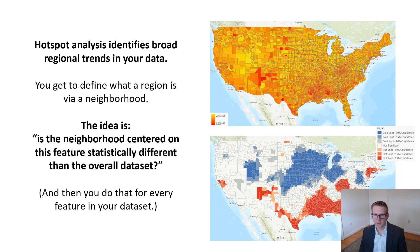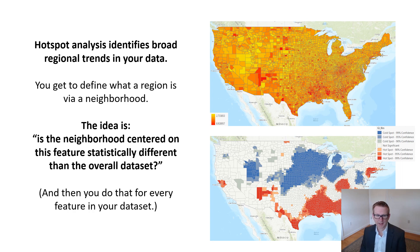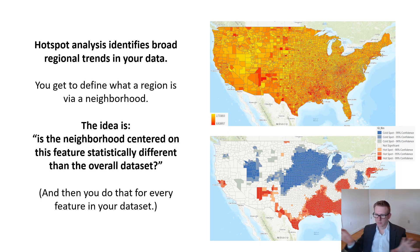Hotspot analysis identifies broad regional trends in your data. Given a raw map you can sort of see highs and lows, but it's tricky. What you want to do is suppress local variation and get the big picture — that's exactly what hotspot analysis does. What we don't want is to look at individual counties and ask if this county is high or low. What we want to ask is: is the neighborhood centered on this feature statistically different than the overall dataset? We do this for all 3,000-plus counties.